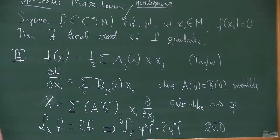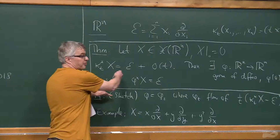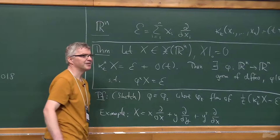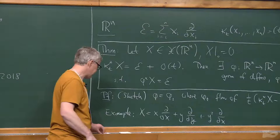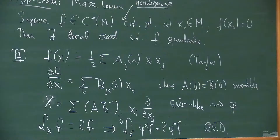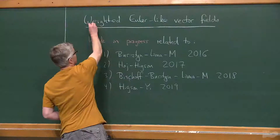Darboux's theorem you can do in the same way. In a way, one doesn't need Moser-type arguments anymore because the Moser-type argument was already used here. Now I want to generalize things a little bit to the weighted context.